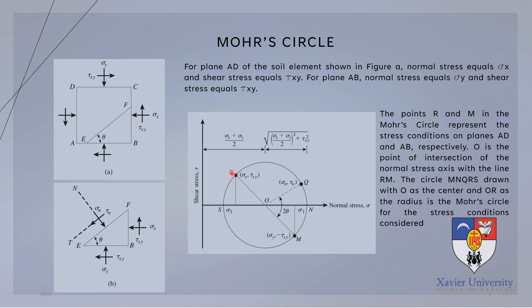These stresses are plotted on the Mohr's Circle as points R and M. The Y-axis represents shear stress and the X-axis represents normal stress. Any movement along the Y-axis represents a value for shear stress, and any movement along the X-axis represents a value for normal stress. Sigma-y can be plotted along the normal stress or X-axis, and tau-sub-xy can be plotted along the Y-axis. Point O is the intersection of the normal stress axis with line RM — that is, the center of the circle.